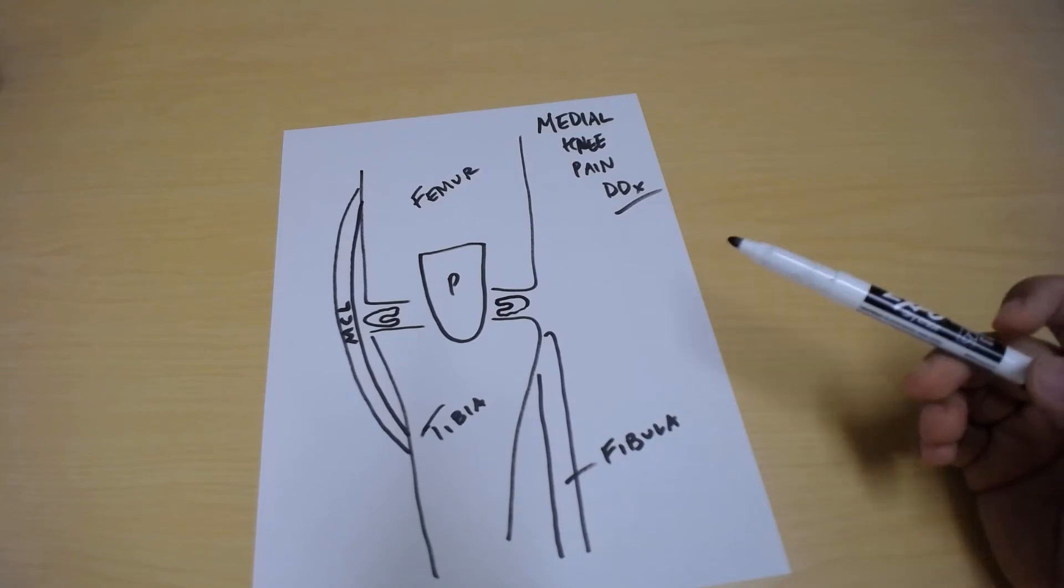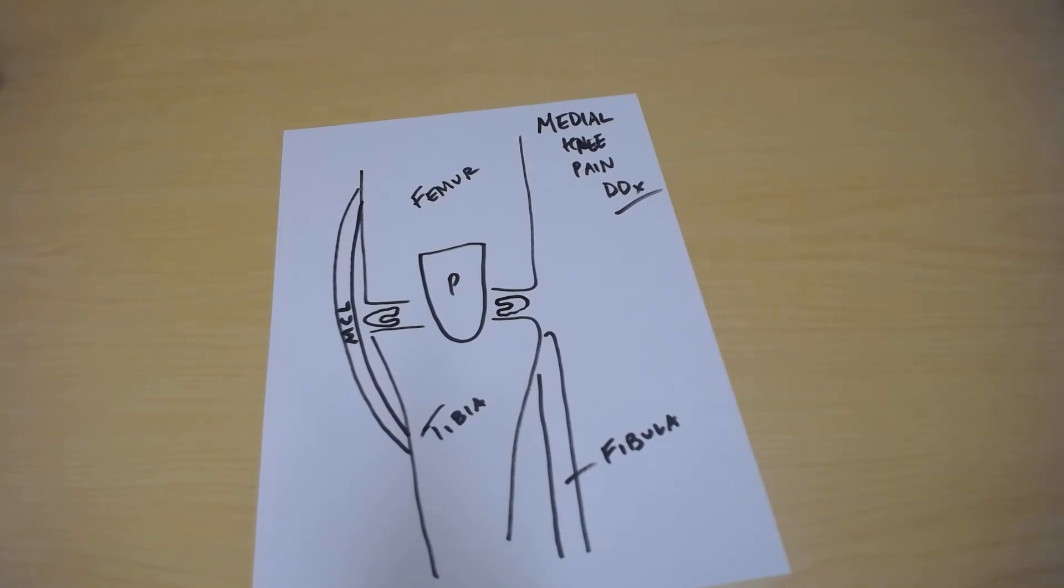The typical type of story that someone will describe is bending down, feeling a pop. Usually it's also got some pivoting or twisting involved. They'll put their foot down as they make a quick pivot or turn, they'll feel a pop. This is very common.